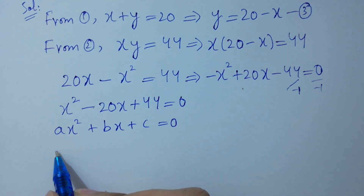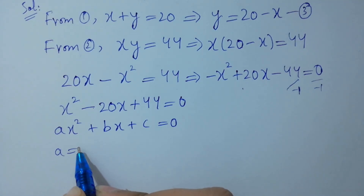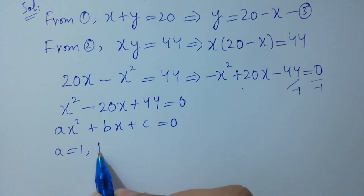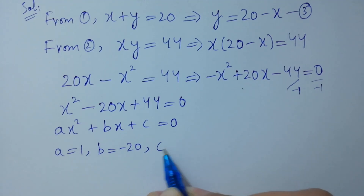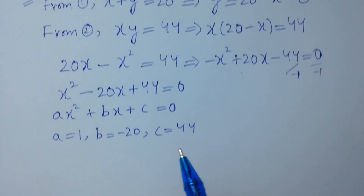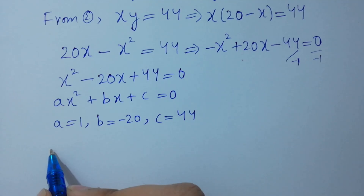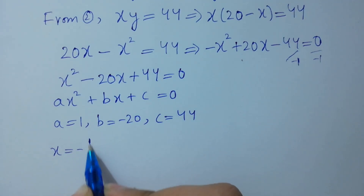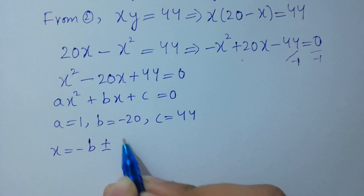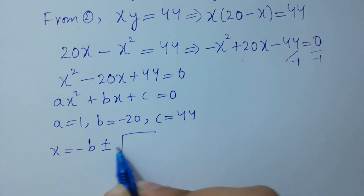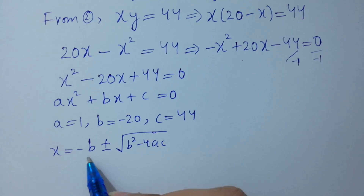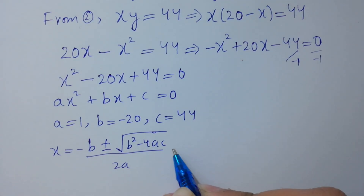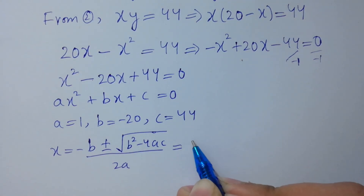Comparing, we have a equal to 1, b equal to minus 20, c equal to 44. Applying the quadratic formula: x equal to minus b plus or minus square root of b squared minus 4ac, all over 2a. Put the values here.